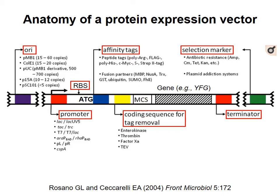Sometimes it doesn't matter if the affinity tag stays on, especially if the tag is small. Of course, you want your favorite gene in the plasmid, and you should also include a transcription terminator so that RNA polymerase knows when to stop making the mRNA. And finally, the plasmid should have some kind of selectable marker so you can identify cells that contain the plasmid.